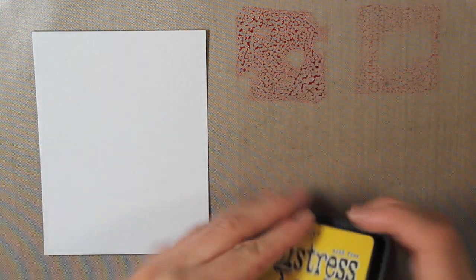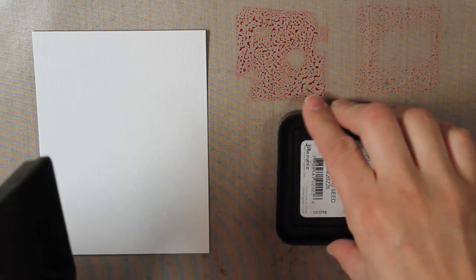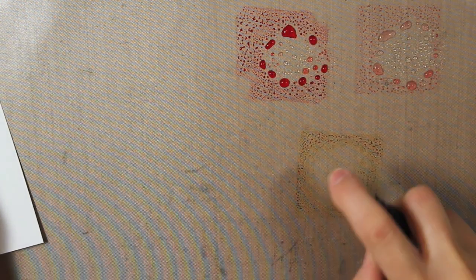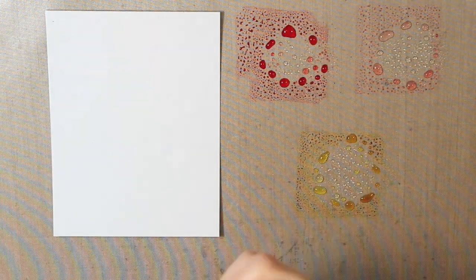But I'm going to start with a little bit of watercoloring. I have three different color distress inks that I'm just putting onto my non-stick craft sheet. I have the Abandoned Coral, Spun Sugar, and Mustard Seed.